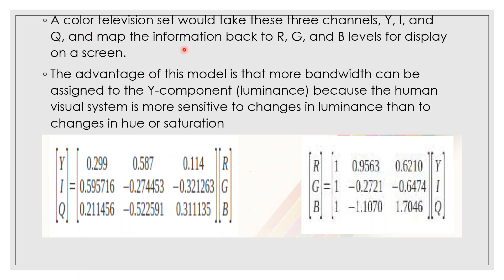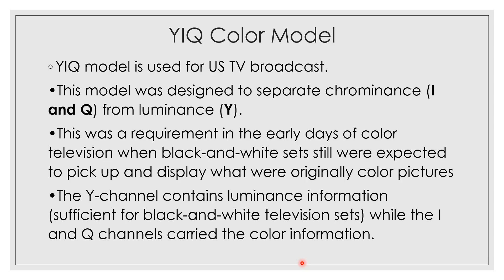For a color television set, you can convert YIQ to RGB by multiplying by a particular matrix corresponding to the YIQ model. YIQ stands for Y for luminance and I and Q for chrominance. Luminance and brightness are the important components of YIQ, which is the US TV broadcast standard.